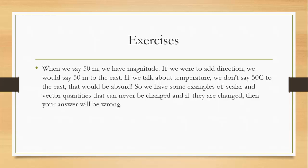If we talk about temperature, we don't say 50 Celsius to the east. We don't give direction because that would be absurd. So we have some examples of scalar and vector quantities that can never be changed, and if they are changed, then the answer will be wrong. For example, temperature can never be a vector quantity, because if it were a vector quantity, we would have to add direction, which would be absurd.